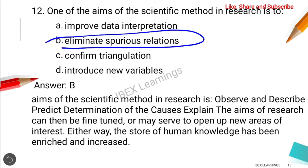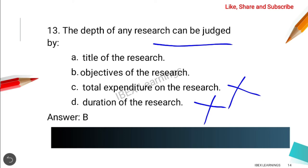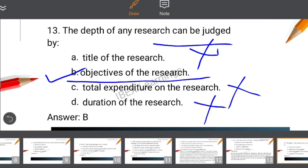The third question is: the depth of any research can be judged by — title of research, objective of research, total expenditure, or duration. Duration is not reliable because sometimes the length of research is not effective. Expenditure is also not a reliable measure. The title is only partially true. So the depth of any research is best judged by the objective of the research. The correct answer is option B.